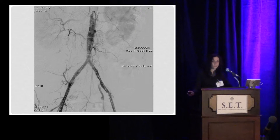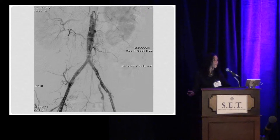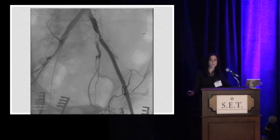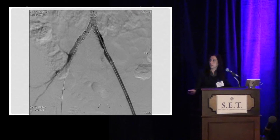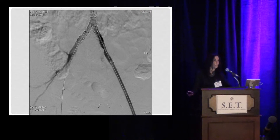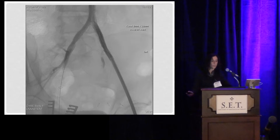At this time, we introduced an Endologix graft that was 22 millimeters in diameter. Because she had a significant portion of healthy infrarenal aorta, we chose to use a short main body segment of 40 millimeters, with 40 millimeters on each iliac limb as well. In order to protect the area of both common iliacs that we had just crossed, we chose to advance a sheath all the way up into the bifurcation and then pull the Endologix device down into the sheath on the left side prior to deployment.